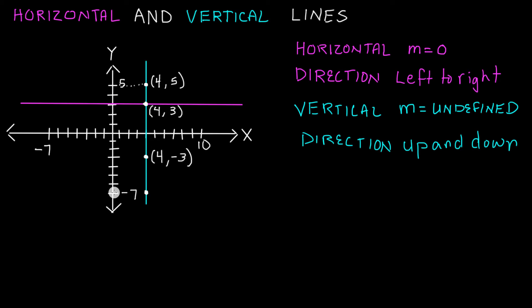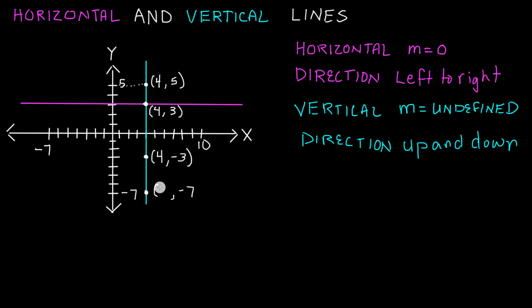And if we go down at the very bottom, we have a y component of negative seven here. So this point has a y component of negative seven. And once again, we go over four units in the x direction — one, two, three, four — and we have an x component of four.